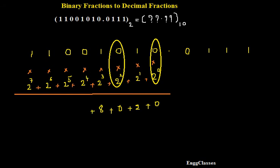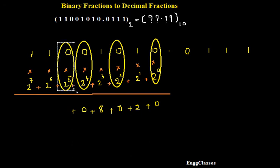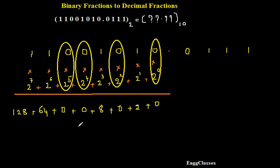Plus 0 into 2 to the power 4 — 2 to the power 4 is 16, and 16 into 0 is 0. Plus 0 into 2 to the power 5 — 2 to the power 5 is 32, and 32 into 0 is 0. Plus 1 into 2 to the power 6 — 2 to the power 6 is 64, so I consider 64. Plus 1 into 2 to the power 7 — 2 to the power 7 is 128, so I consider 128. The answer is 128 plus 64 plus 8 plus 2.